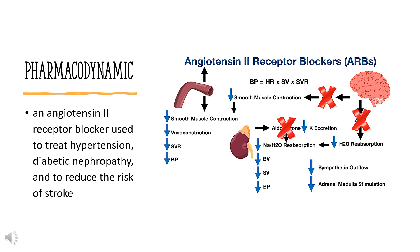Pharmacodynamics: Irbesartan is an angiotensin receptor blocker used to treat hypertension and diabetic nephropathy. It has a long duration of action, as it is usually taken once daily, and a wide therapeutic index — doses may be as low as 150 mg daily, but doses of 900 mg per day were well-tolerated in healthy human subjects.